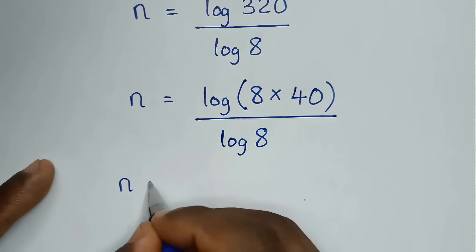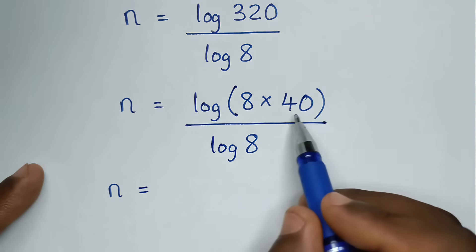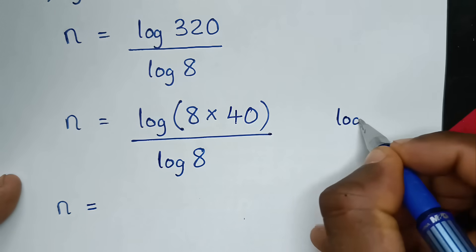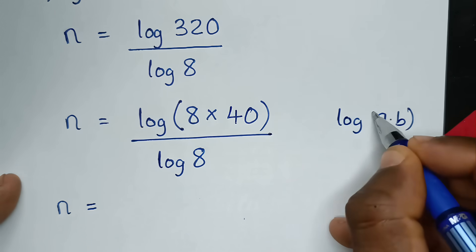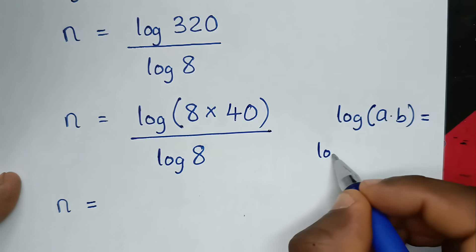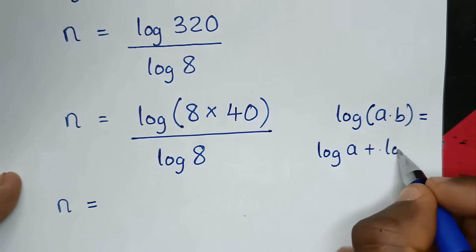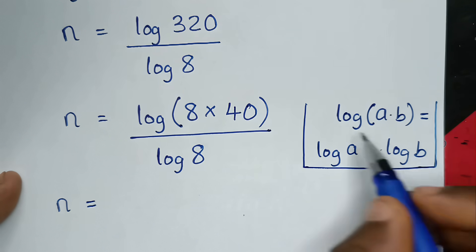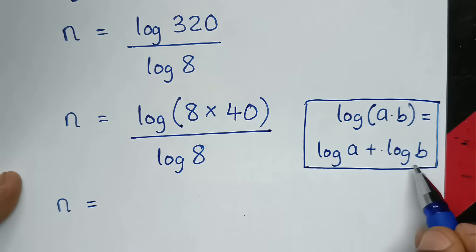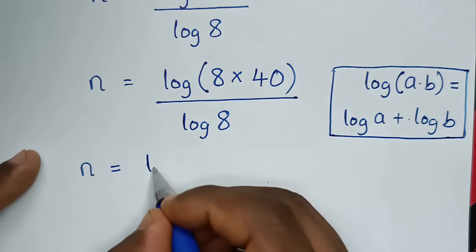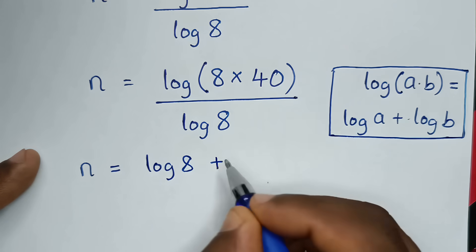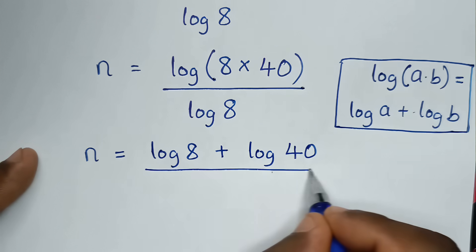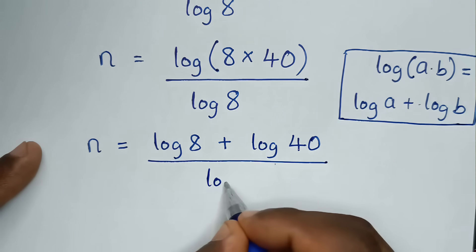Then it will be n is equal to log of 8 times 40. This part is in the form of log of a times b, which is equal to log of a plus log of b. So applying this rule, it will be log of 8 plus log of 40, over log of 8.